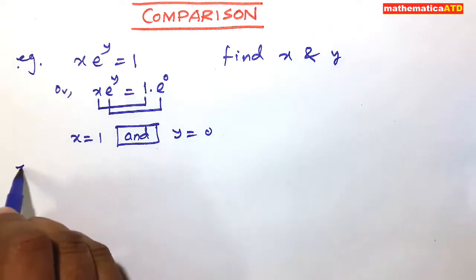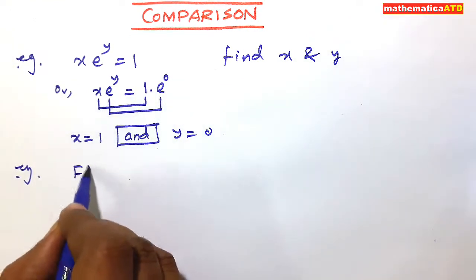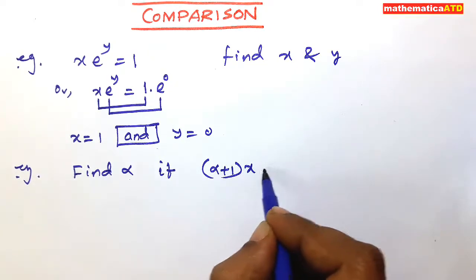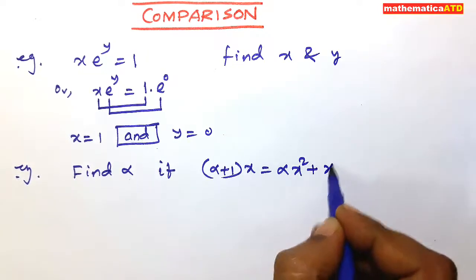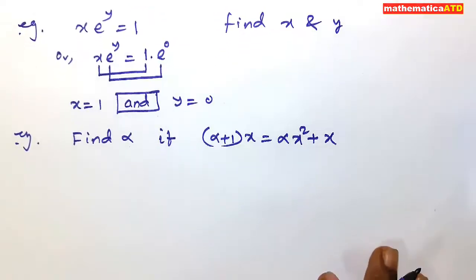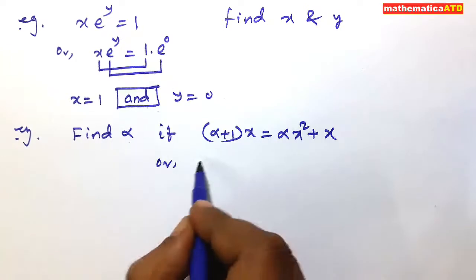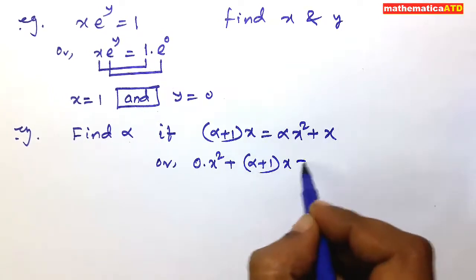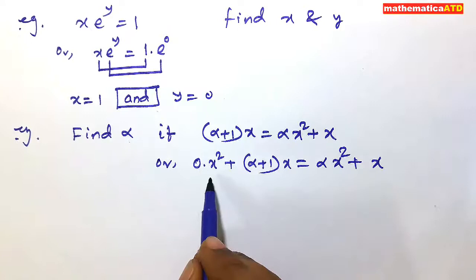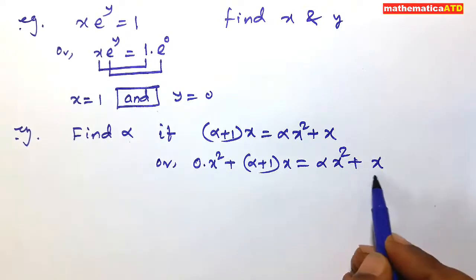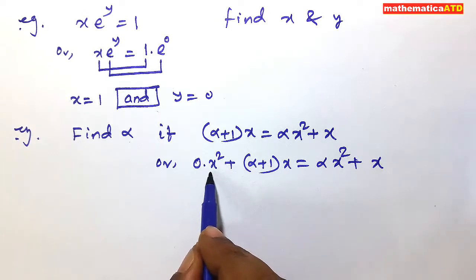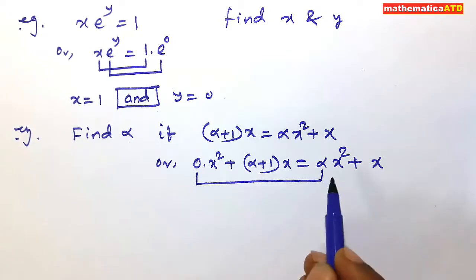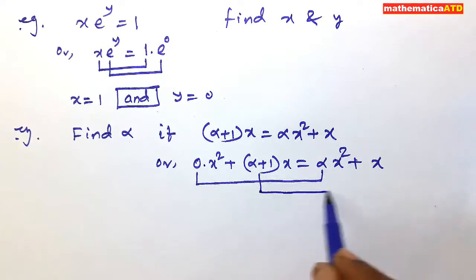The next comparison example: find alpha if (alpha plus 1) times x is equal to alpha·x squared plus x. For this, write 0·x squared plus (alpha plus 1)·x is equal to alpha·x squared plus x. I have arranged with respect to the right side — x squared on the left side, also x squared; x on the left side, also x. So you can compare both sides. In comparison, use only the conjunction 'and', not 'or'.